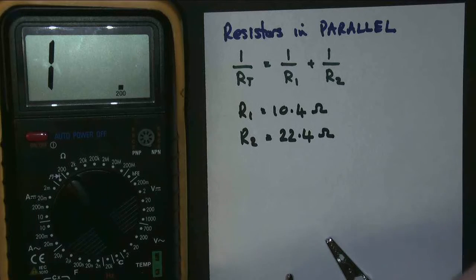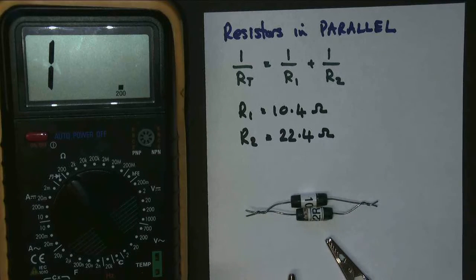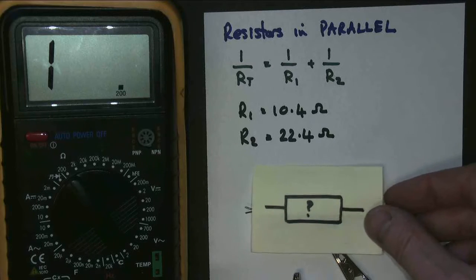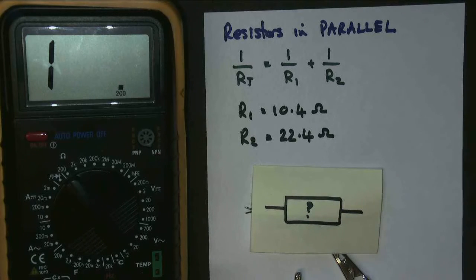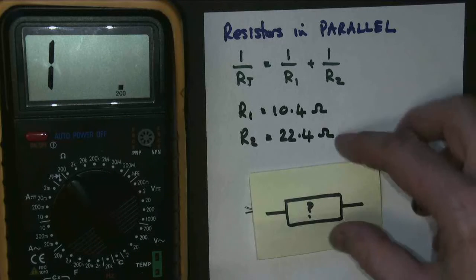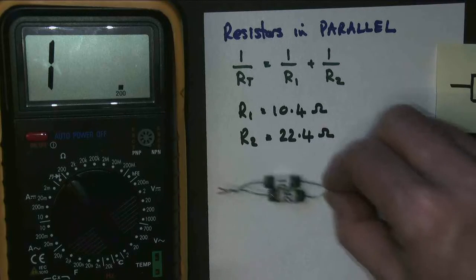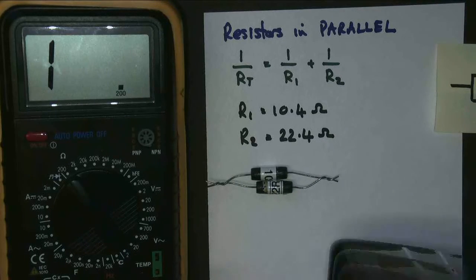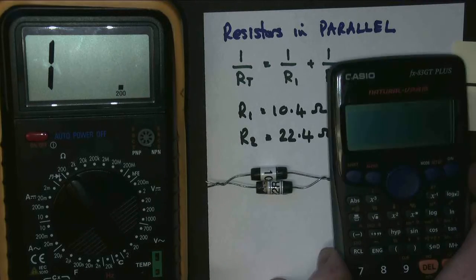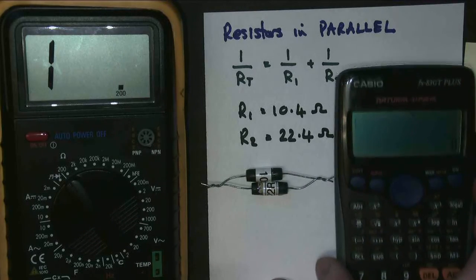And the question is, what value is that going to give us for our unknown resistance? If we had one resistor, what would that resistor be? Well, we're going to need some heavy equipment here. We're going to need a calculator. Here's my calculator.